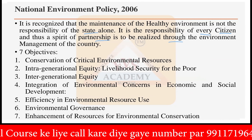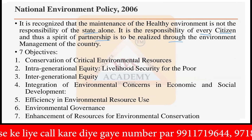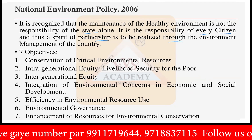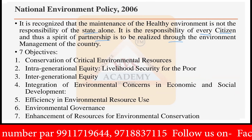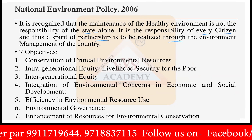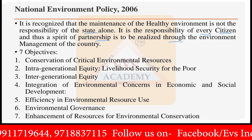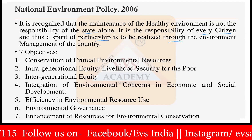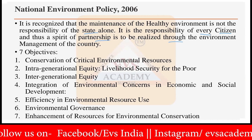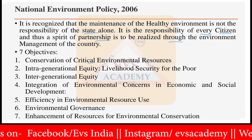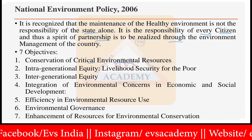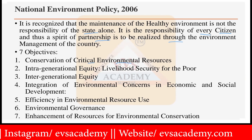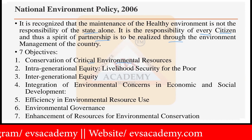Looking at the objectives of the National Environment Policy of 2006, there are a total of seven objectives. The first objective is the conservation of critical environmental resources. The second is intergenerational equity, and the third is livelihood security for the poor.